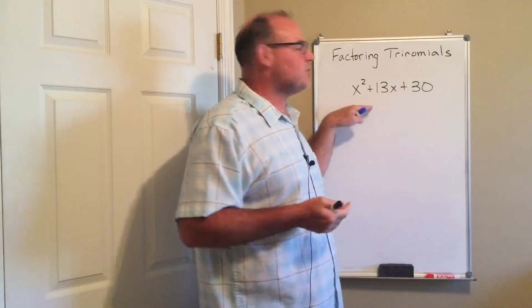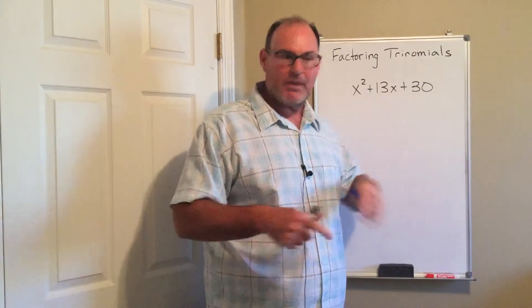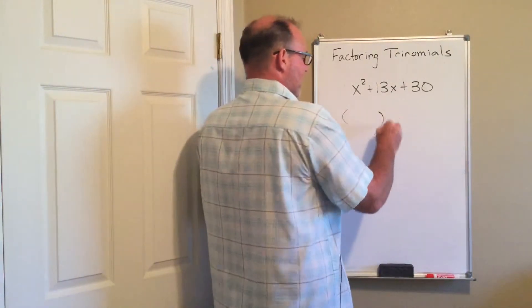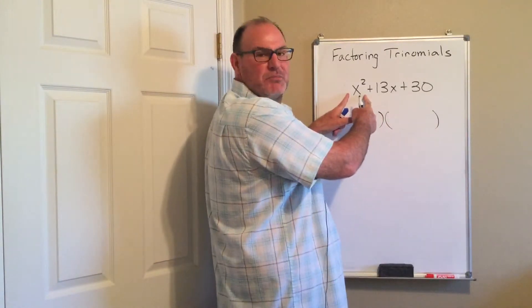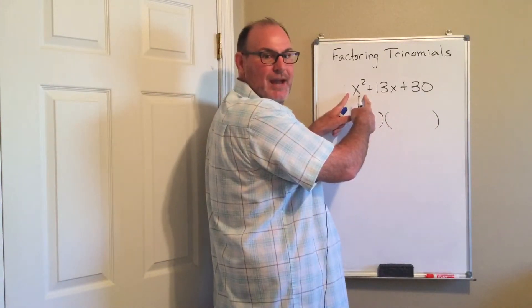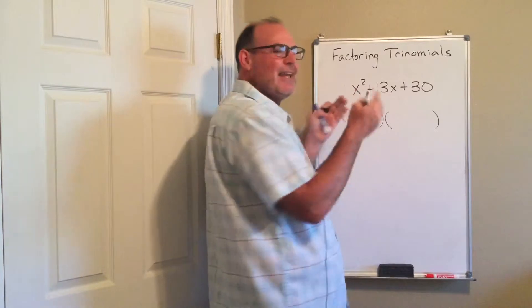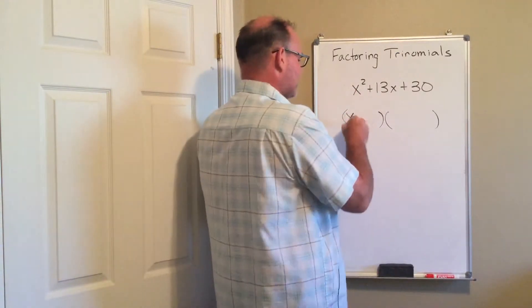Remember, what we're trying to do here is we are unfoiling. The x squared is what I got when I multiplied my firsts together when I was foiling. So the only way to get x squared is to have an x and an x.